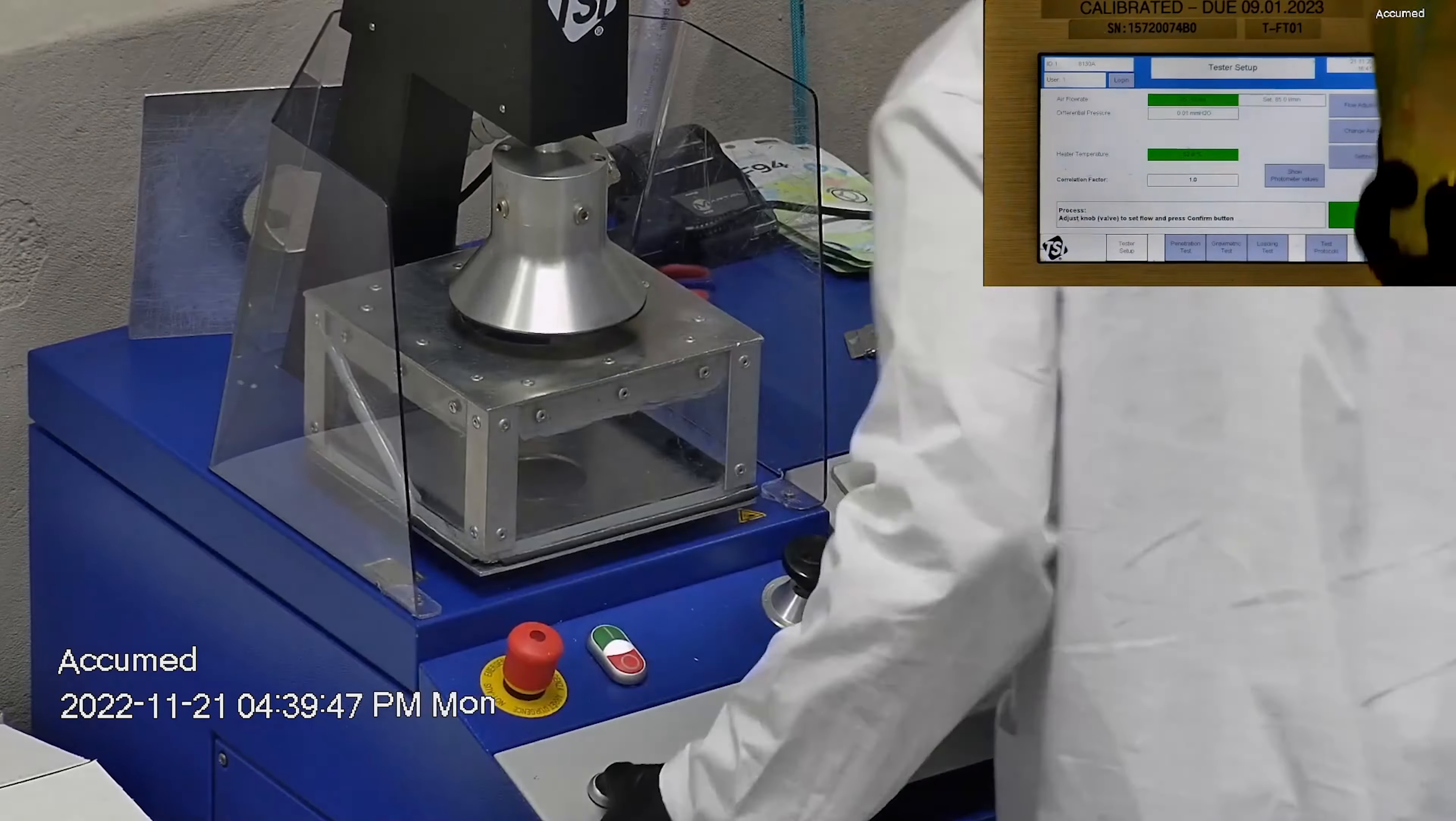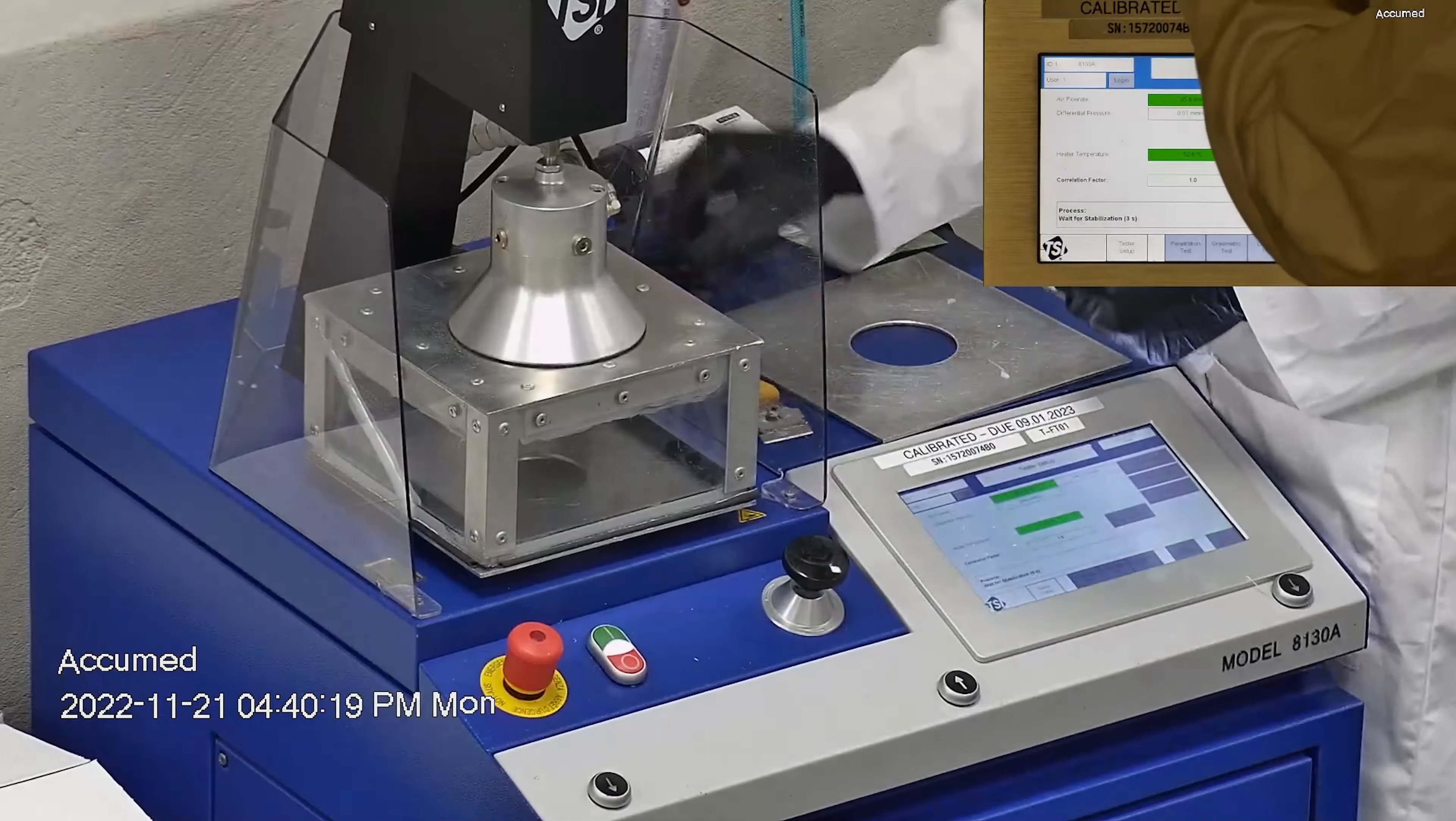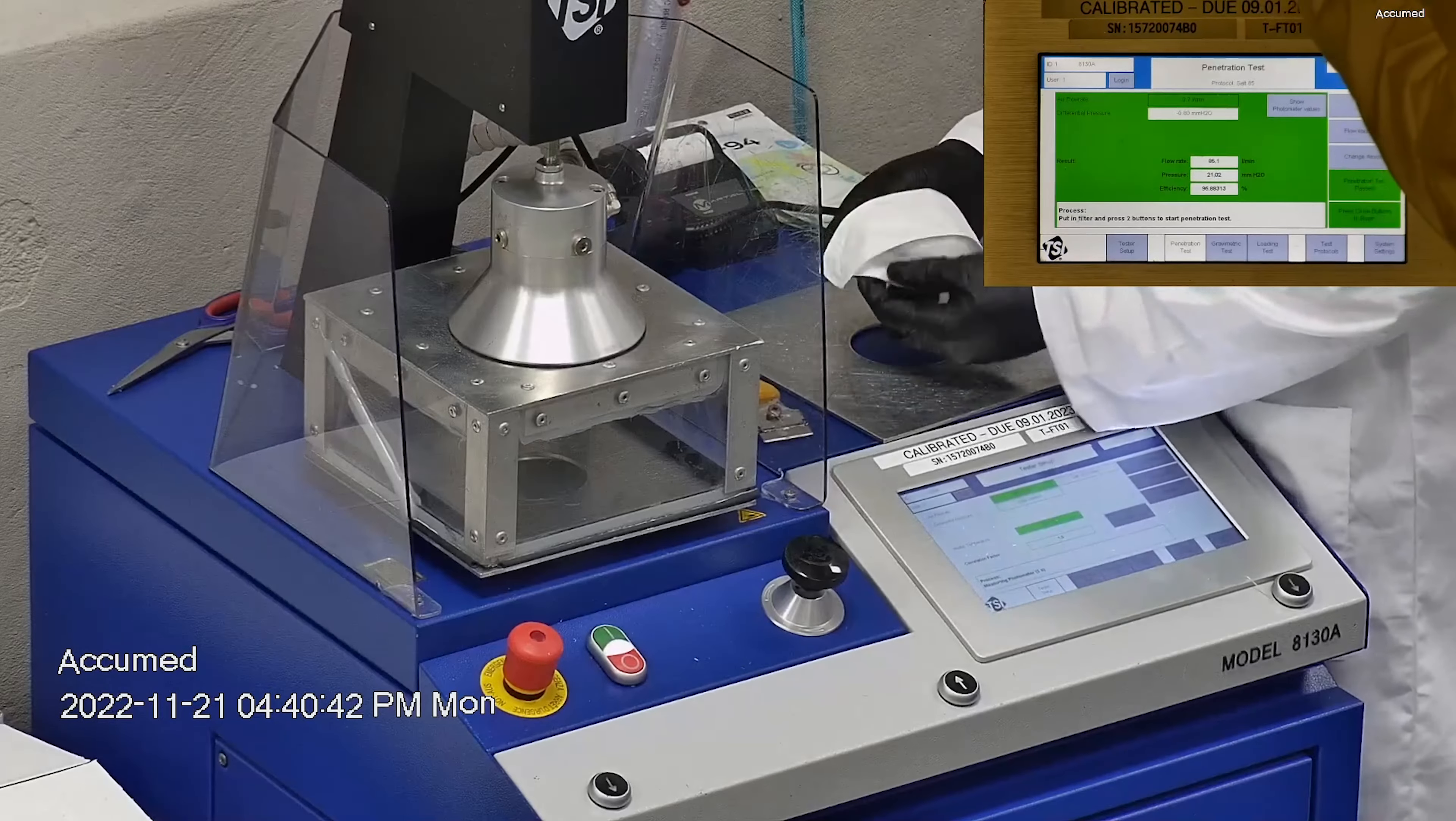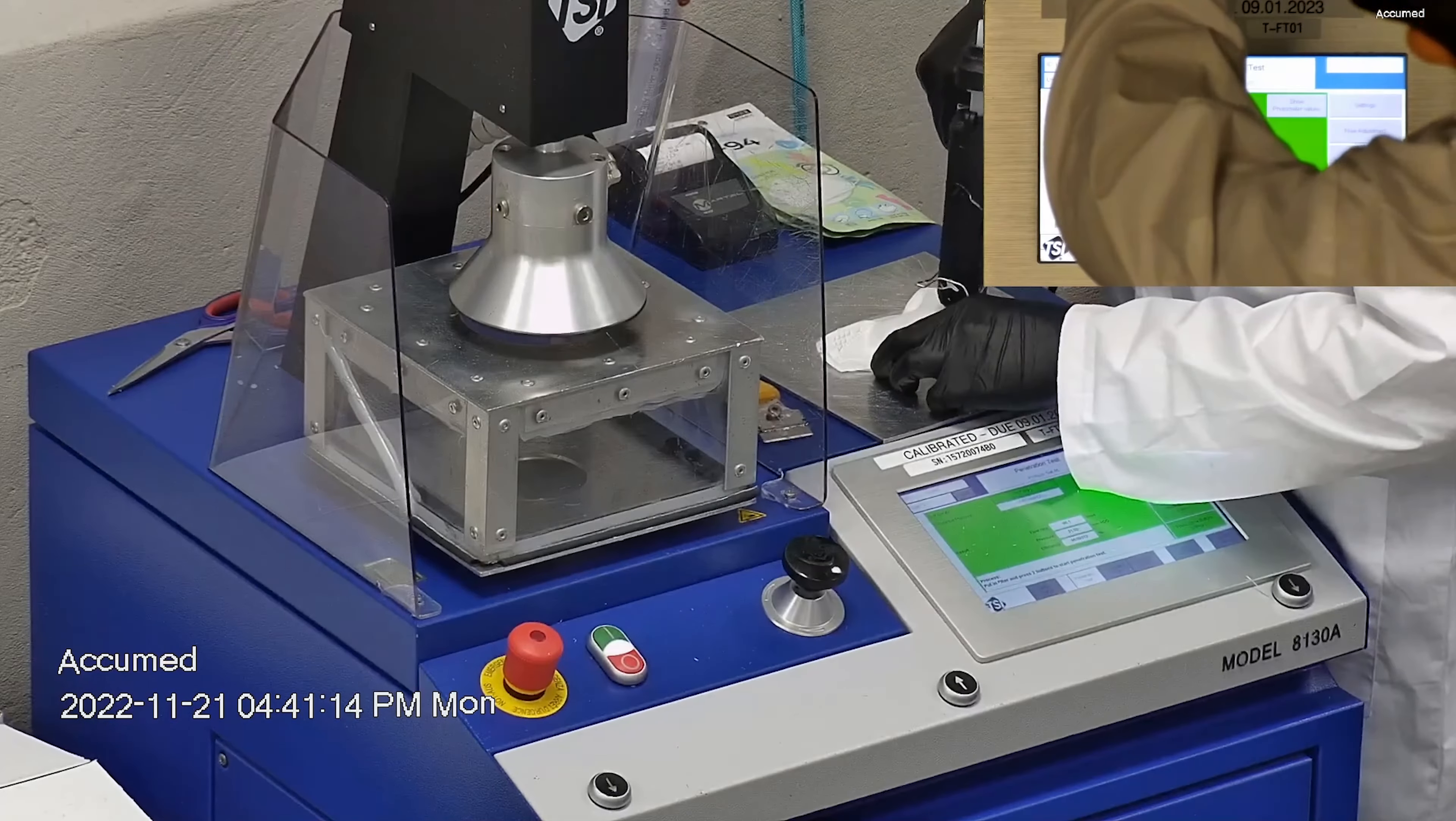This is our TSI machine, model 8130A, which is also the same filtration testing machine that NIOSH uses to approve N95 respirators. Our procedure is also inspired by NIOSH. We first run the tester setup and start removing the headband or ear loop bands from the respirator or mask before placing it on the testing plate to ensure a proper seal.